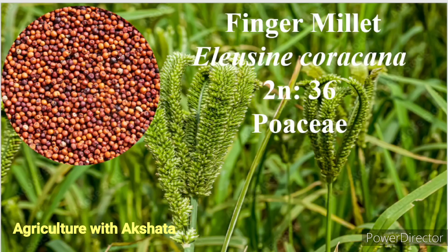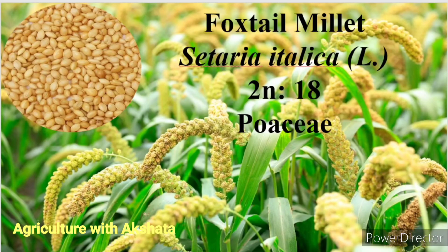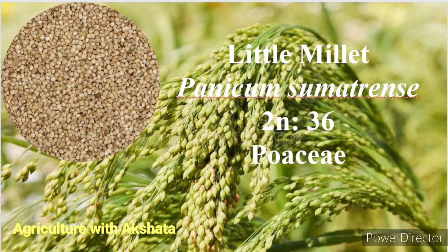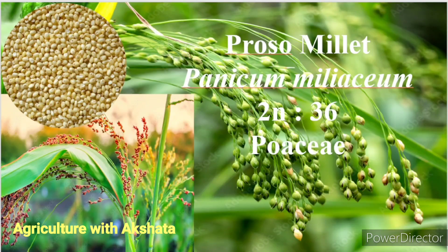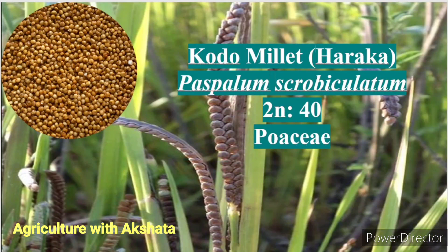Finger millet also called Ragi: Eleusine coracana, 2n = 36, Poaceae family. Foxtail millet: Setaria italica, 2n = 18, Poaceae family. Little millet: Panicum sumatrense, 2n = 36, Poaceae family. Proso millet: Panicum miliaceum, 2n = 36, Poaceae family. Kodo millet: Paspalum scrobiculatum, 2n = 40, Poaceae family.